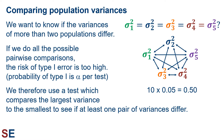We can't measure the populations, so we take random samples from the populations and calculate sample variances. We could compare each pair of variances using the variance ratio F test, but if we do all the possible pairwise combinations, the risk of type 1 error is too high. This is because the probability of a type 1 error for each test is alpha, and they will add up. We therefore use a test which compares the largest variance to the smallest to see if at least one pair of variances differ. That test is the Fmax test.